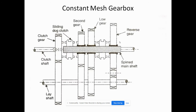Before going to the synchromesh gearbox, let us discuss some important points. First is gear arrangement: multiple gears are arranged on parallel shafts in the constant mesh gearbox. Gears are always in mesh with each other, allowing for quick and efficient gear changes — we can change gears very efficiently and very quickly.